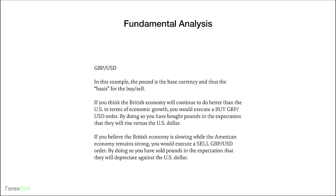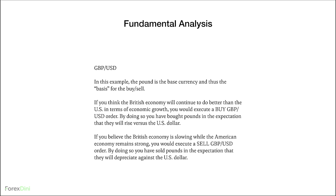For pound/USD, if you think the British economy will continue to do better than the US in terms of economic growth, you would execute a buy pound/USD order. If you believe the British economy is slowing while the American economy remains strong, you would execute a sell pound/USD order. To simplify: whenever you take a buy trade, you're hoping the base currency goes up and the quote currency goes down. When you're buying, you're hoping the first currency on the left strengthens and the second currency on the right weakens.